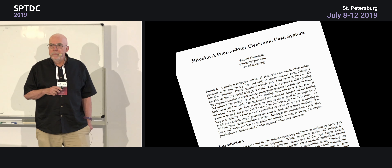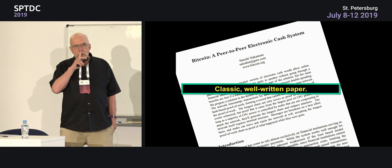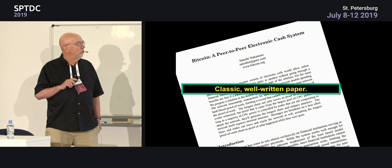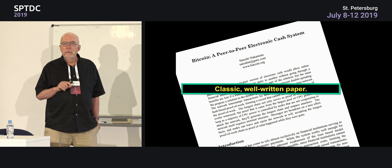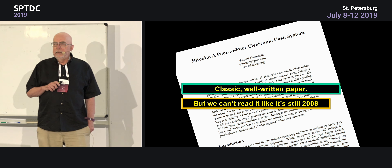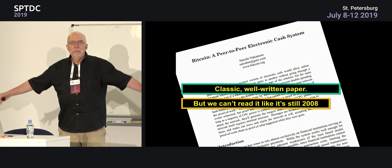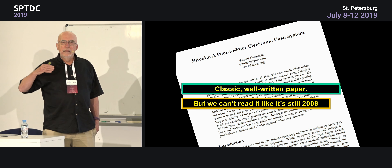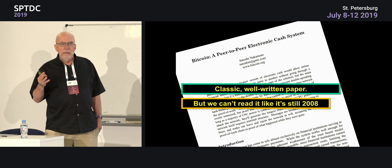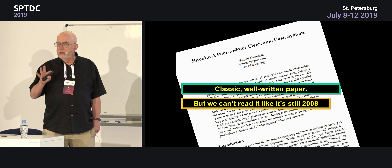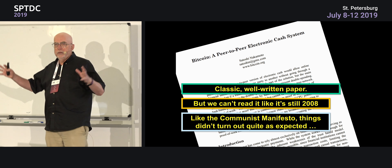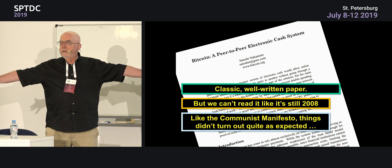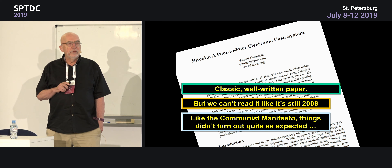The original paper that defined Bitcoin is a very well-written paper. People have looked at it carefully trying to figure out who wrote it — it cleverly mixes American and British spelling to throw people off. But we can't read it like it's still 2008. Bitcoin has grown and become famous, but many of the people who promote it haven't read the paper recently. If you look at it, the paper doesn't necessarily say what most people think it says. Like other founding documents for ideological movements, things turned out differently from the way people saw the world when it was written.